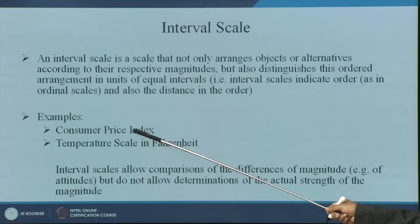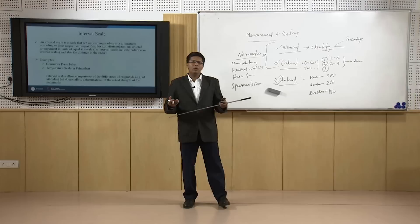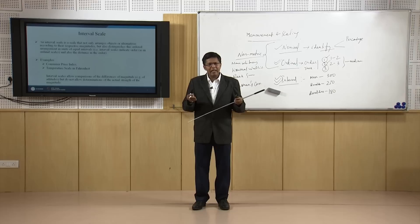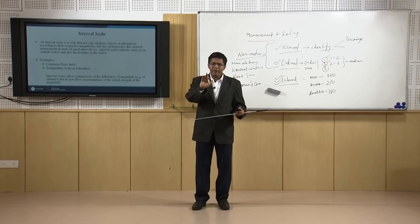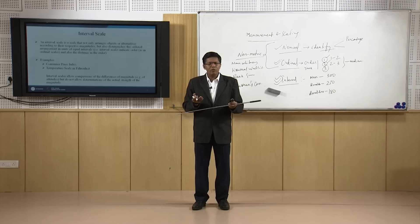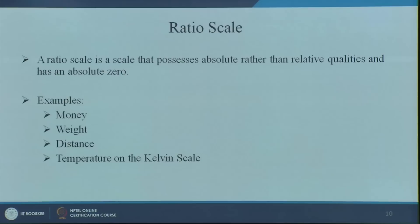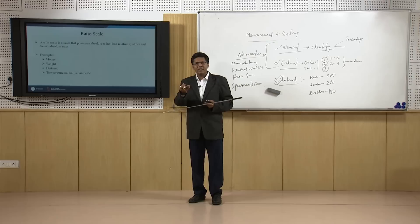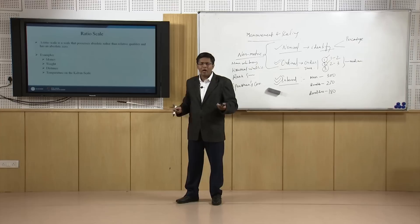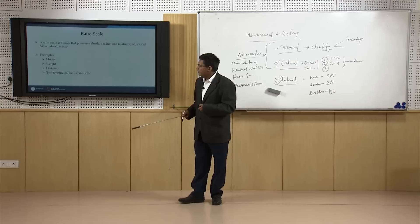Consumer price index and temperature scale are interval scale examples. If I ask how much you like this class on a scale of 1 to 7, I have not given a 0 deliberately because it is difficult to say what 0 means. For the ratio scale: your weight of 60 kg starts from absolute 0. Similarly, money in your bank — you could have 0 or 1000 rupees. All these have an absolute 0 point, which is why they are ratio scale.